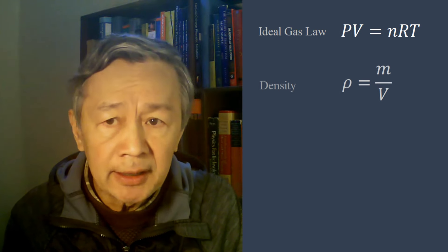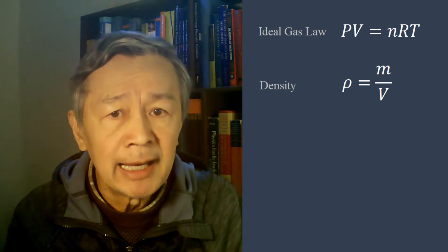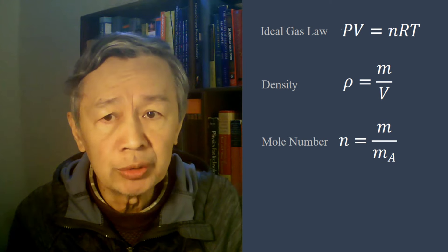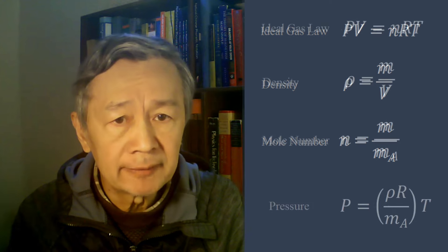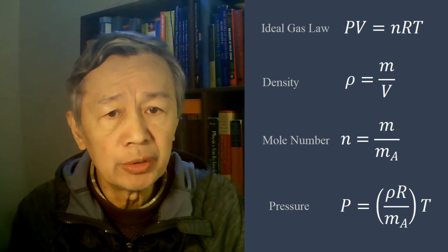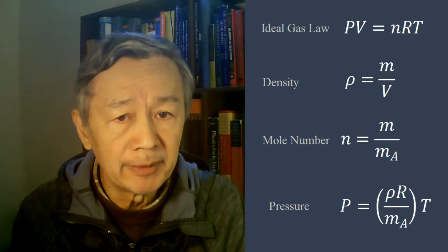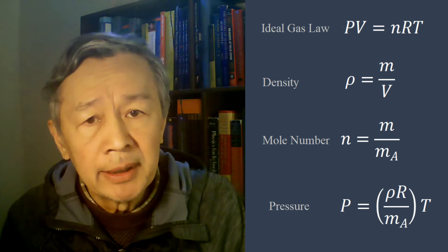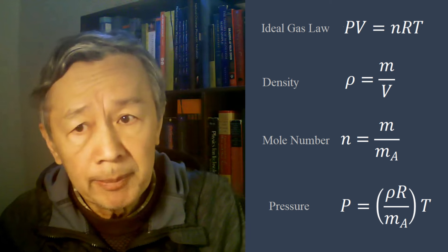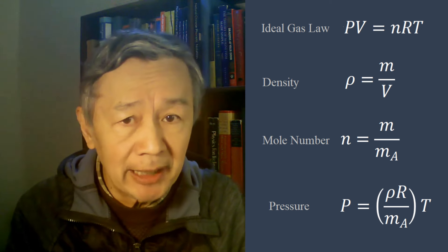Because gas density is mass per unit volume, and the molar number equals mass divided by molar mass, then we have this formula: p equals ρR divided by m_A multiplied by temperature T. It is apparent, pressure is proportional to temperature if gas density is kept constant.